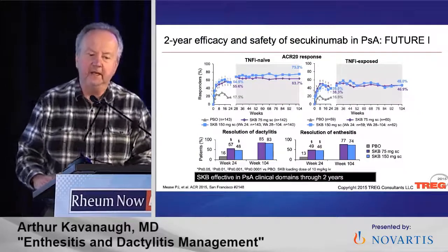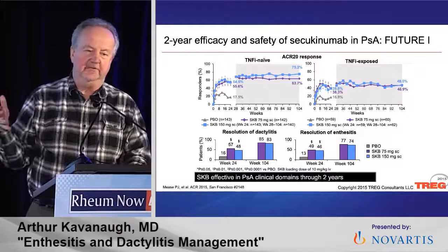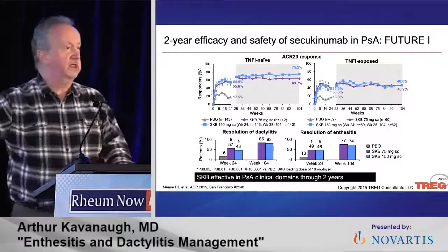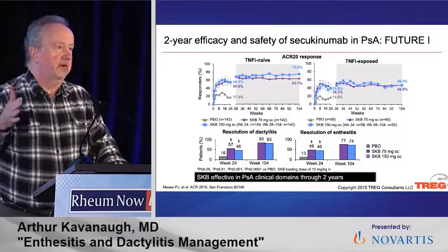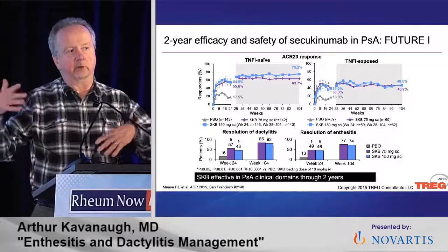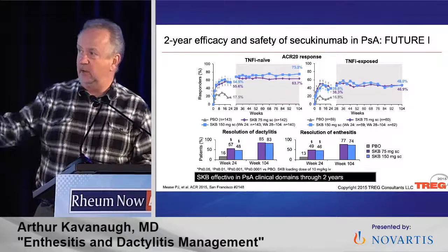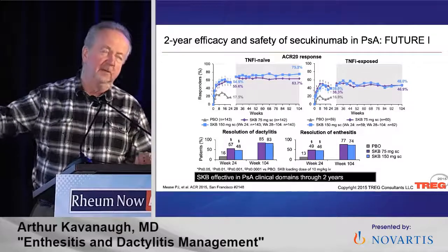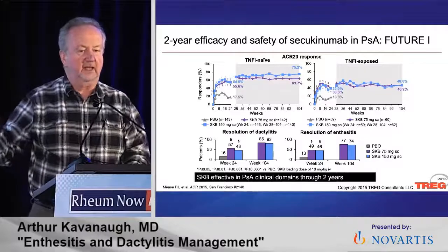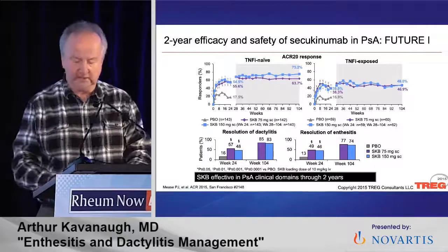What about the IL-17 inhibitors? Here's data with secukinumab from the FUTURE study — TNF-naive patients, TNF-exposed patients. Looking at resolution of dactylitis — taking anybody who had dactylitis at the start and recording those who have none at the primary endpoint at week 24 — then the open-label extension where placebo drops out, you see a very clear effect on dactylitis and enthesitis. So the IL-17 inhibitors definitely cover the domains of dactylitis and enthesitis.